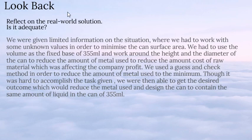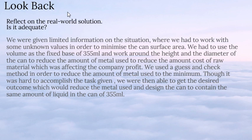Lastly, let's reflect on the available solution. Was it adequate? We were given limited information and had to work with some unknown values in order to minimize the can's surface area. We used volume as a fixed base of 355ml and worked around the height and diameter of the can to reduce the amount of material used, thereby reducing the cost of raw materials which was affecting the company's profit. Using the guess and check method, we were able to get the desired outcome: reducing material used while designing the can to still contain 355ml of liquid.